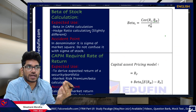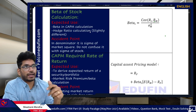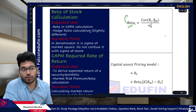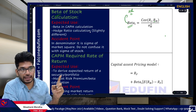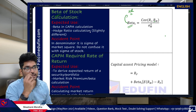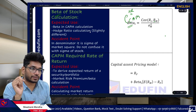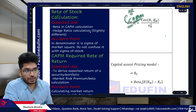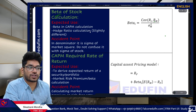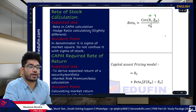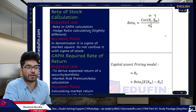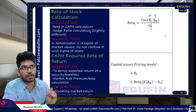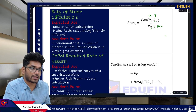We'll go through the formulas book by book — Book 1, then Book 2, 3, and 4. First is the beta calculation, which is required in two specific locations: the hedge ratio in Book 3, and the CAPM model. The formula is: covariance of X and Y, or return of stock (I) and return of market (M), divided by sigma M squared — that is the market variance.